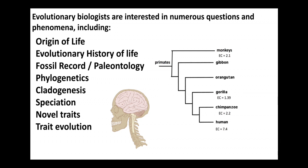So this phylogeny here, underneath some of the names, it says EC. This stands for encephalization quotient. It's basically the relative size of the brain, taking into account the size of the organisms.